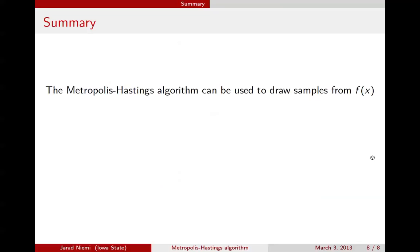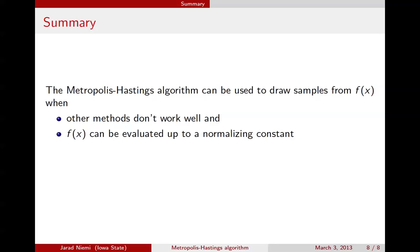In summary, the Metropolis-Hastings algorithm can be used to draw samples from a target distribution, and you should think about it when other methods don't work well. This method does not provide independent samples, whereas the inverse CDF and accept-reject methods do. So it's often better to use those methods first if possible. All we need is the ability to evaluate the target density up to a normalizing constant and to choose a proposal distribution. Unlike the accept-reject method, we do not need to find a value m that envelopes the target distribution, which is one advantage of Metropolis-Hastings.